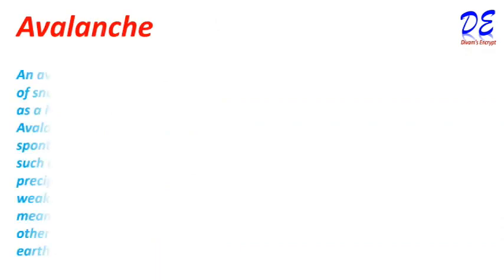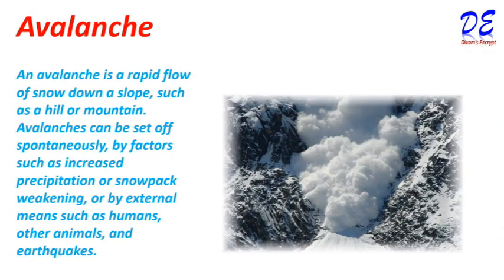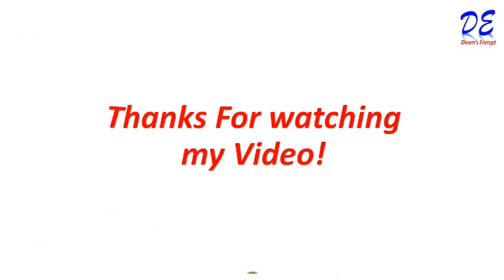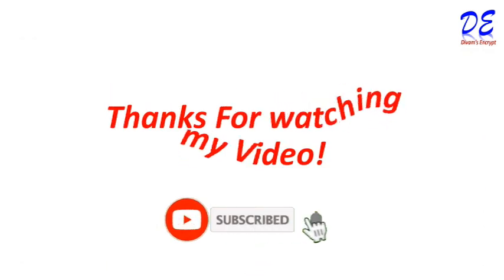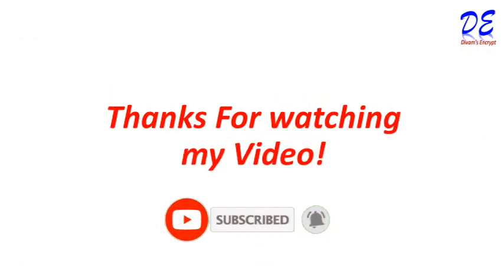Avalanche. An avalanche is a rapid flow of snow down a slope, such as a hill or mountain. Avalanches can be set off spontaneously by factors such as increased precipitation or snowpack weakening, or by external means such as humans, other animals, and earthquakes. I hope you find the video very informative. Thanks for watching — see you again in my next video. Until then, bye bye!